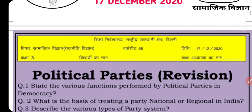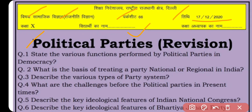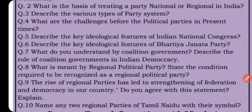As visible on your screen, this is our Worksheet No. 66, Subject SST Social Science, Political Science Chapter No. 6, Political Parties. Date: 17th of December 2020. In today's worksheet, 10 plus 1 — total 11 questions will be given, and the first 4 questions are ones that you will 100% be given in your exam.